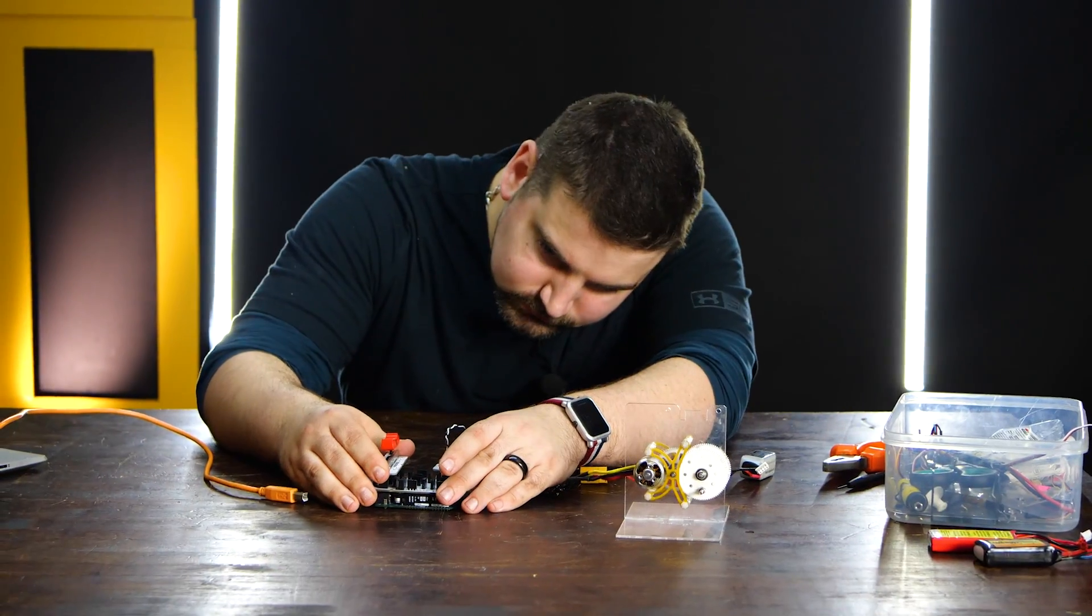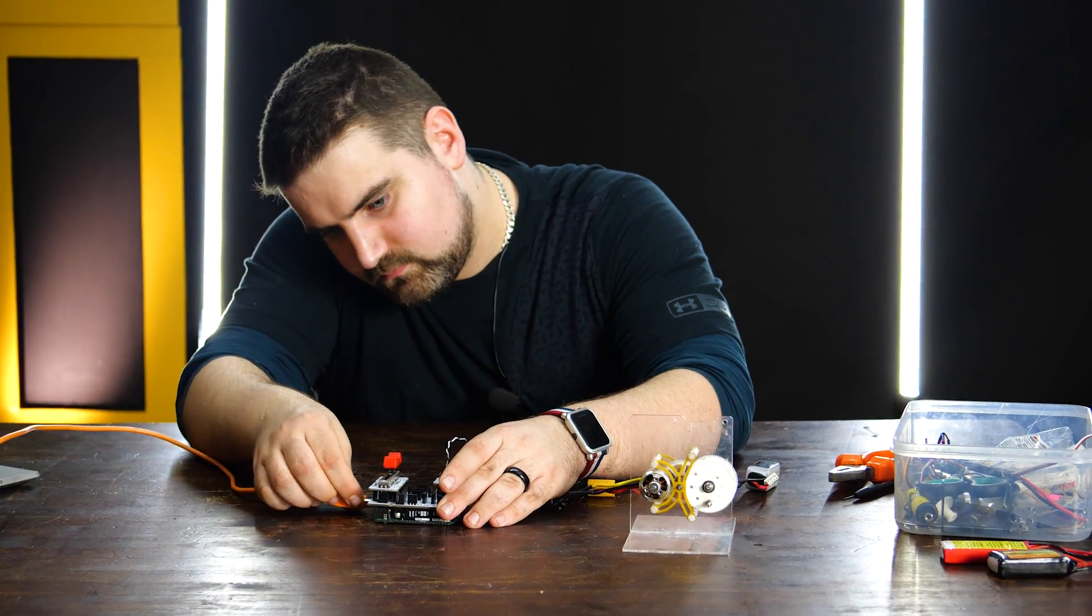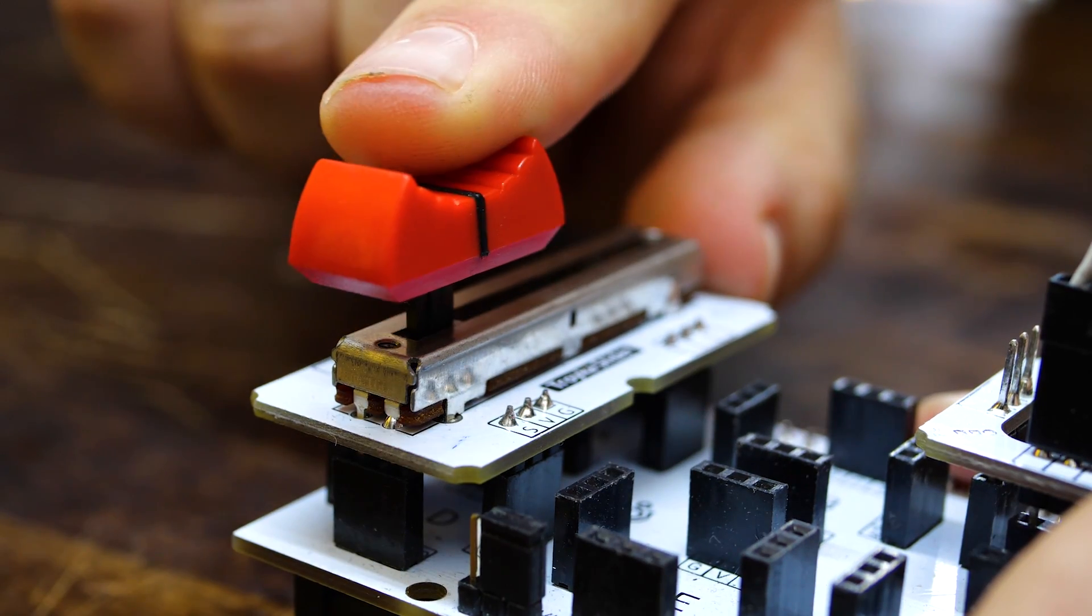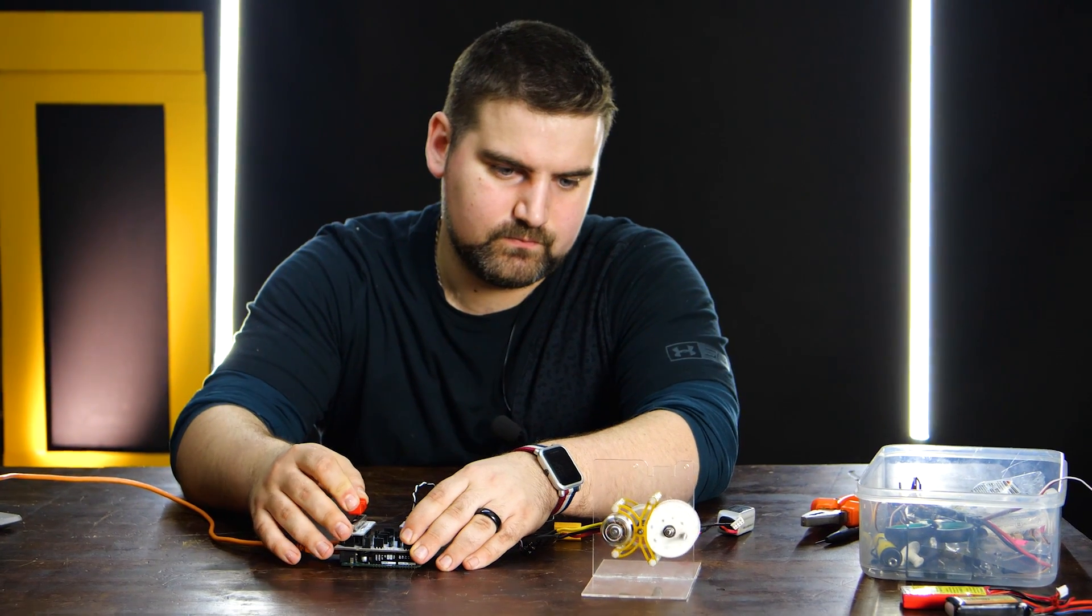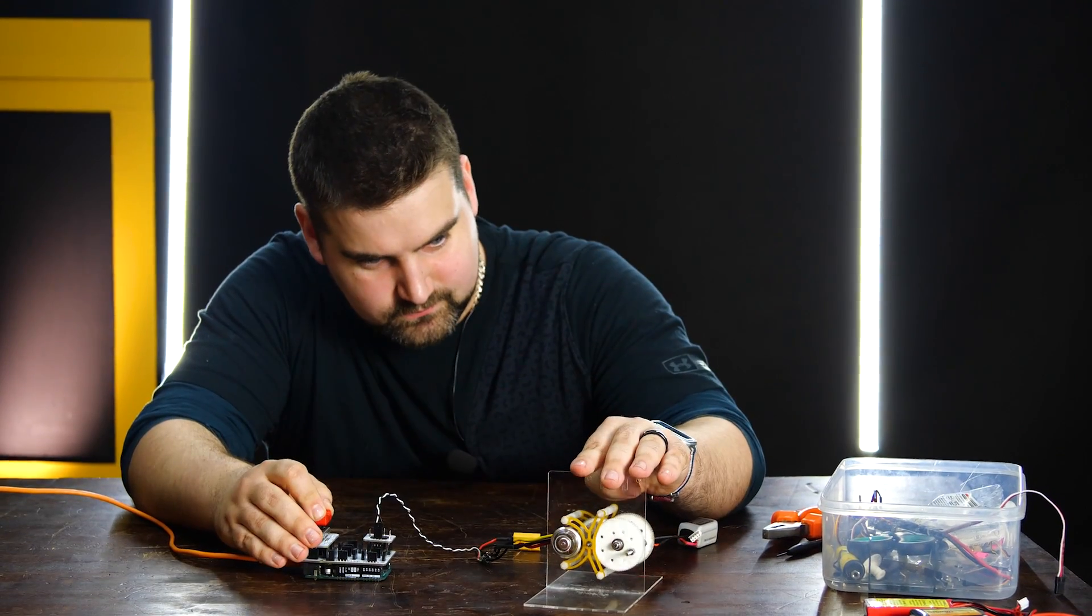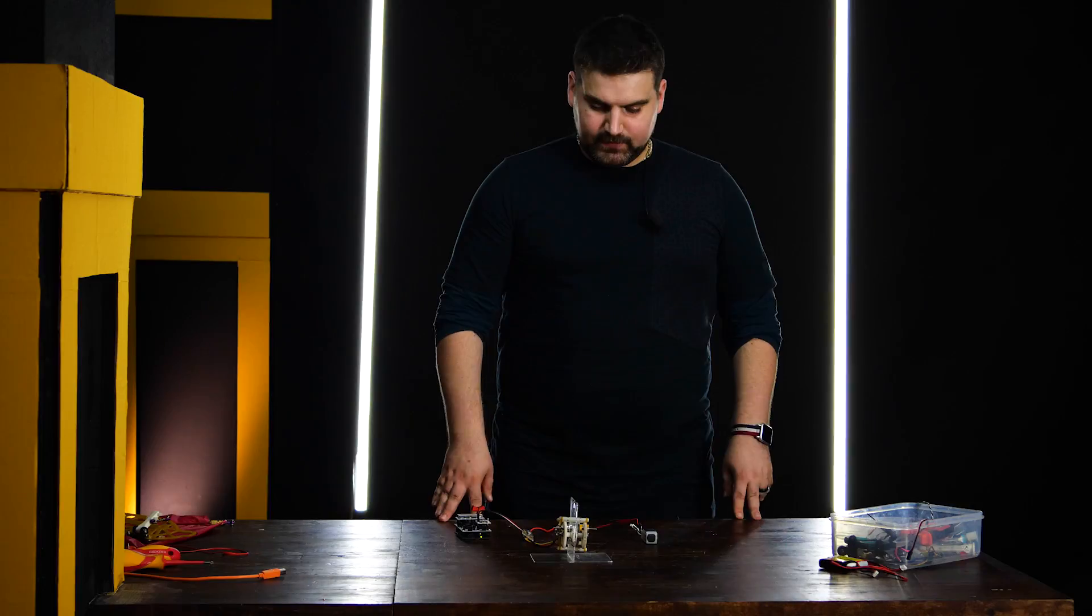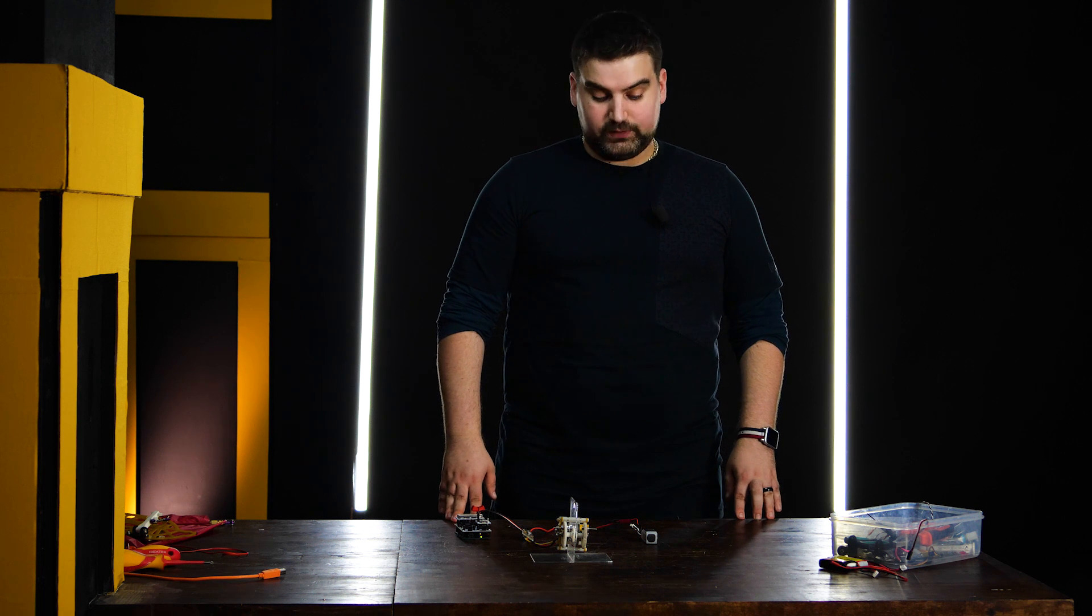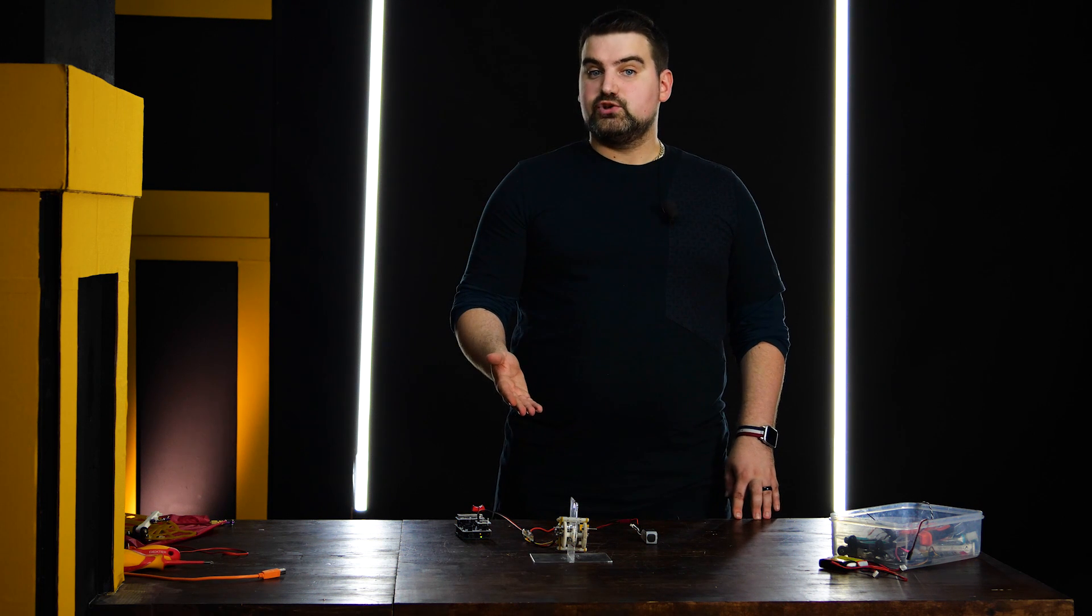I control the ESC like a common servo via Arduino with a potentiometer. Its analog signal is transformed into a PWM signal with a required frequency and goes to the regulator. Now I can control the RPM ratio with a potentiometer. Now I want to check how my assembly works. Will it really give me six revolutions per hour?